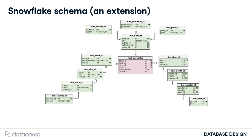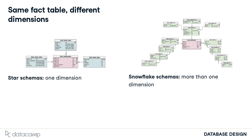The star schema got its name because it tends to look like a star with its different extension points. Now that we have a good grasp of the star schema, let's look at the snowflake schema. The snowflake schema is an extension of the star schema. It has more tables, and the information contained in the schema is the same as the star schema — in fact, the fact table is the same — but the way the dimension tables are structured is different. The star schema extends one dimension while the snowflake schema extends over more than one dimension.